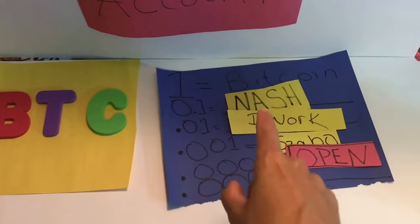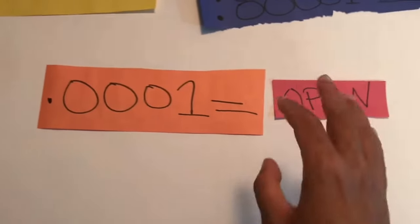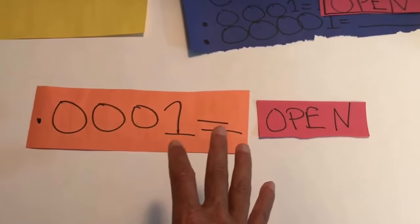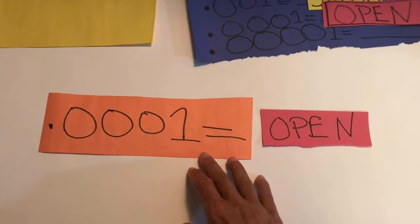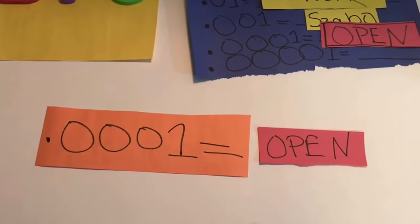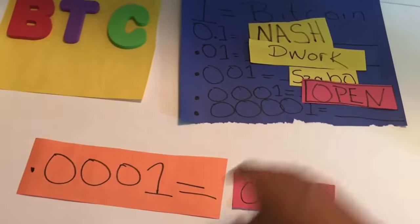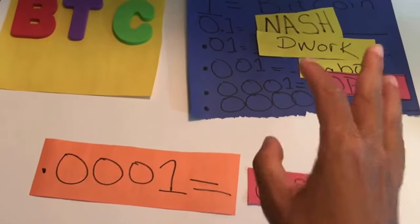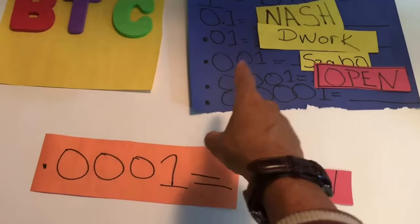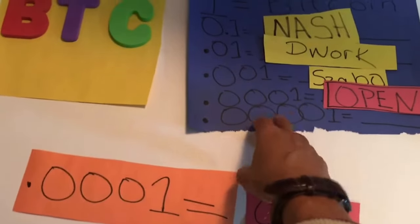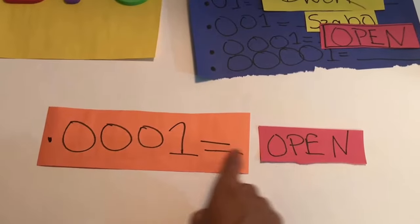I left the fourth denomination open intentionally. There may be a developer or important figure who contributed to Bitcoin's existence that I haven't thought of. I'm putting it up to you — who do you think deserves the fourth denomination? Something in a name that people can relate to, rather than a mathematical decimal designation like 'millibits' or 'bit cents.'